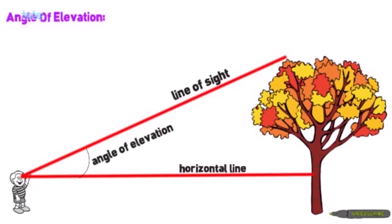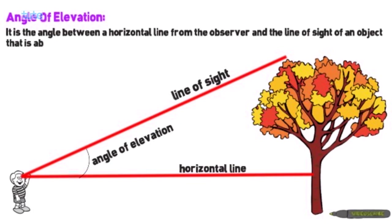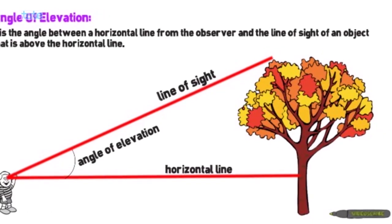The angle of elevation is the angle between the horizontal line from the observer and the line of sight to an object that is above the horizontal line.